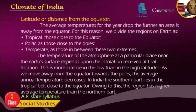Insolation is more intense in the low latitudes than in the high latitudes. As we move away from the equator towards the poles, the average annual temperature decreases. In India, the southern part lies in the tropical belt close to the equator. Owing to this, the region has higher average temperature than the northern part.